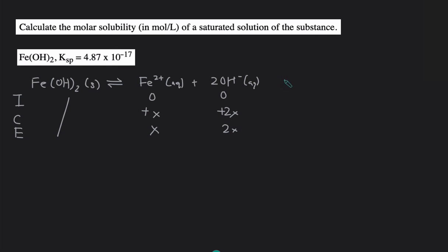Then we set up the Ksp. Ksp will equal the concentration of the iron times the concentration of the hydroxide raised to the second power because of the coefficient and then nothing on the bottom because the reactant is a solid.